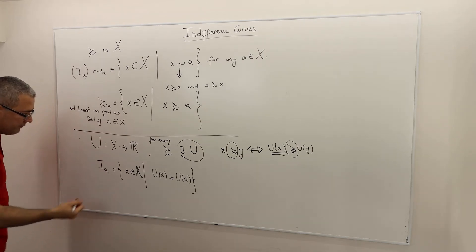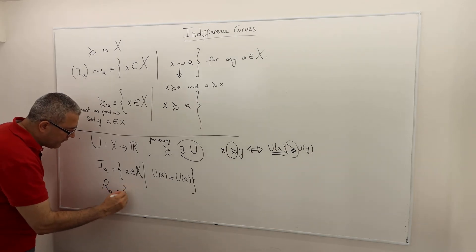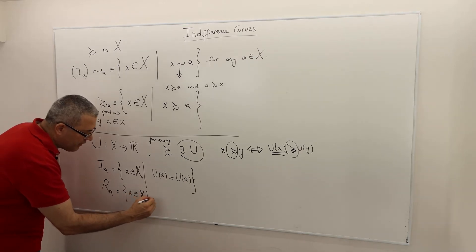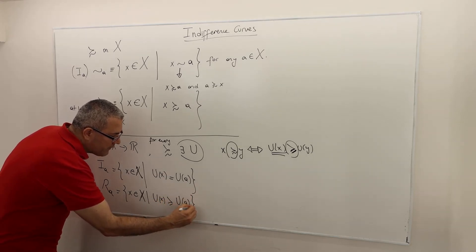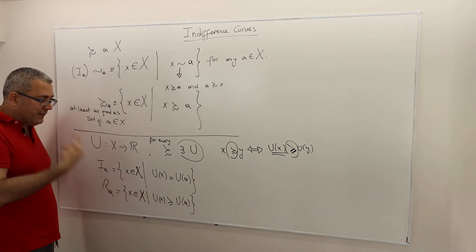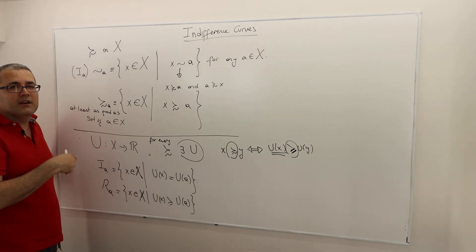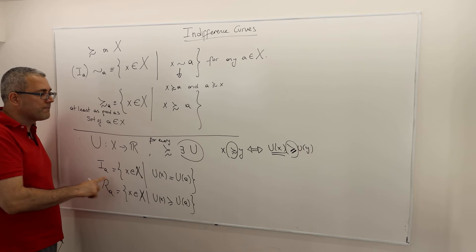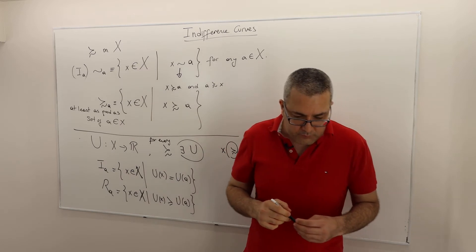Similarly, the at-least-as-good-as set R(a) is all x in X such that u(x) ≥ u(a). Note that a is itself in this set, because the preference relation is reflexive — a is at least as good as itself — so a always belongs to its own at-least-as-good-as set.